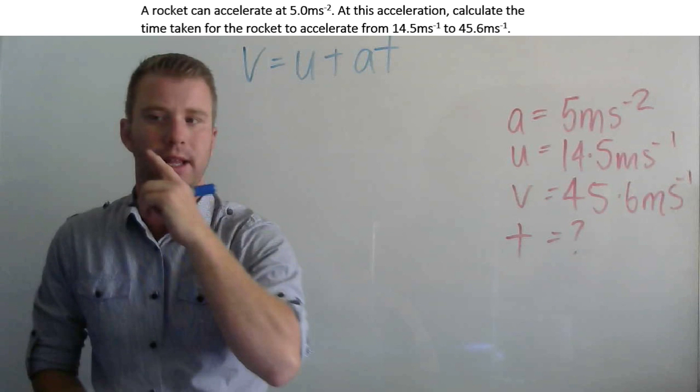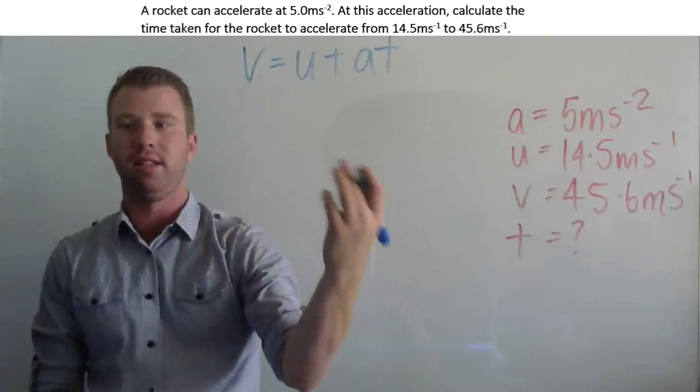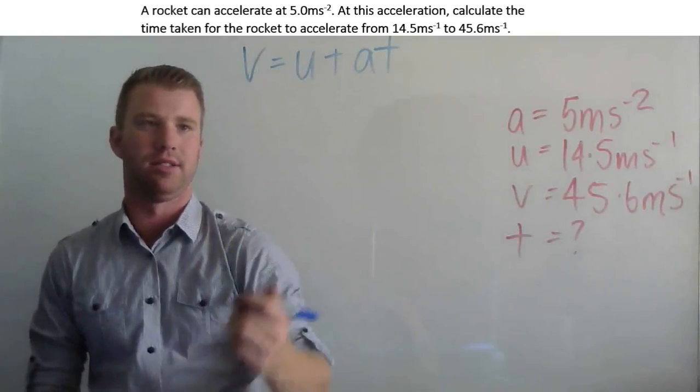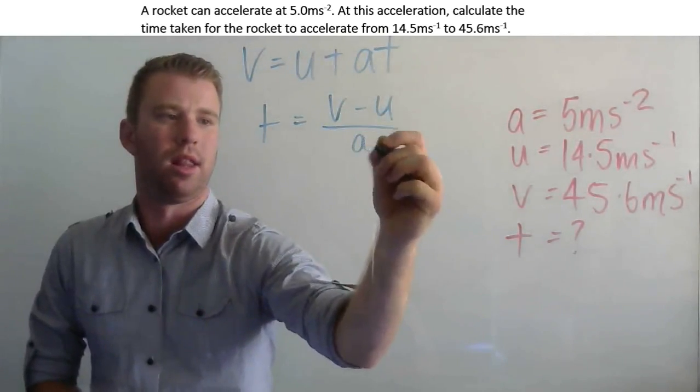Now we're going to rearrange this to find time. You need to subtract u from both sides and then divide both sides by a. So t equals v minus u over a.